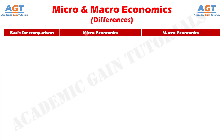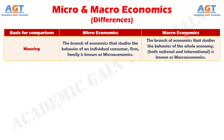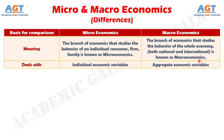Let's look into the basic differences between microeconomics and macroeconomics in a tabular form. Difference number 1: the branch of economics that studies the behavior of an individual consumer, firm, or family is known as microeconomics, whereas the branch of economics that studies the behavior of the whole national and international economy is known as macroeconomics. Difference number 2: microeconomics deals with individual economic variables, whereas macroeconomics deals with aggregate economic variables.